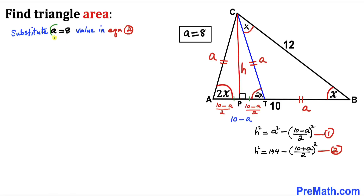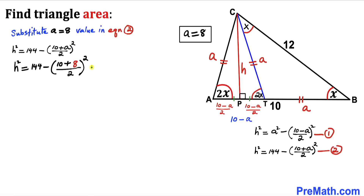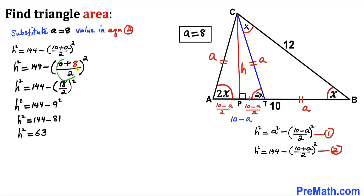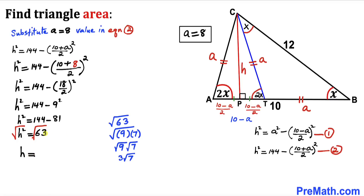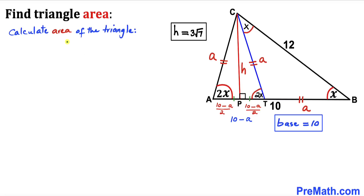Substituting a = 8 into equation 2: H² + ((10 + 8)/2)² = 144, which simplifies to H² + 9² = 144, so H² = 144 − 81 = 63. Taking the square root of both sides, H = √63 = 3√7.